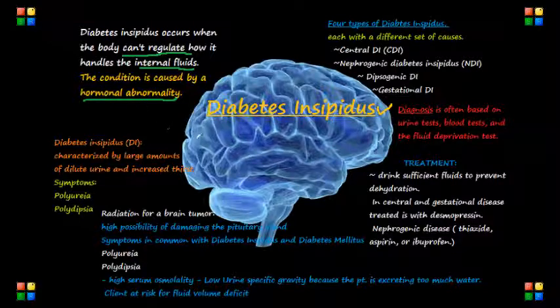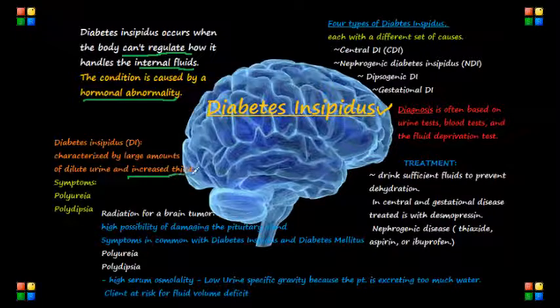Diabetes insipidus is characterized by large amounts of diluted urine and increased thirst. The main symptoms in a patient are polyuria and polydipsia.